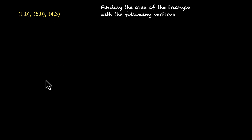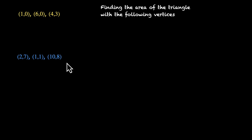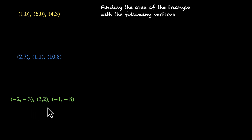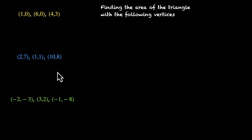Here are two more sets: (2, 7), (1, 1), (10, 8). And the last three points: (–2, –3), (3, 2), and (–1, –8). So these three sets will form three different triangles, and we have to find the area of all three of them.